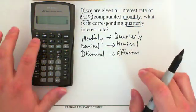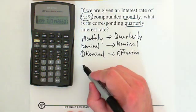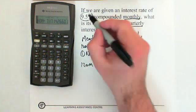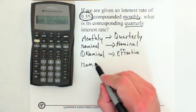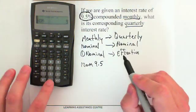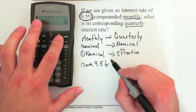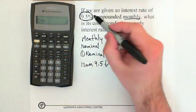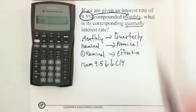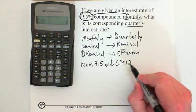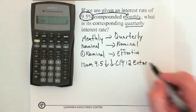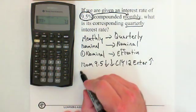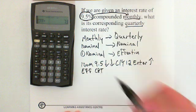Turn on our calculators and go Second Function 2. The first thing that pops up is NOM, and the NOM in this case will be the existing nominal rate, which is 9.5. Type in 9.5, Enter, then push the down arrow twice to go to CY. The 9.5% is compounded monthly, so CY is going to be 12. At CY, type in 12, Enter, push the up arrow to EFF, and at EFF push Compute.